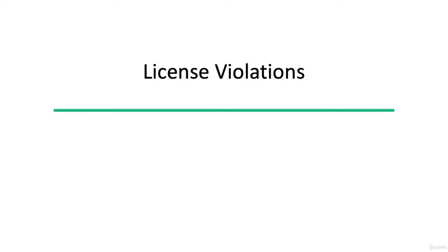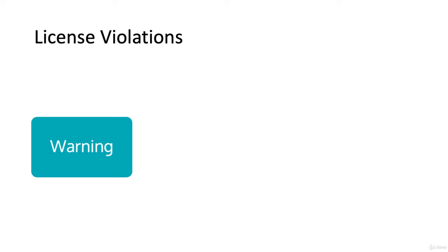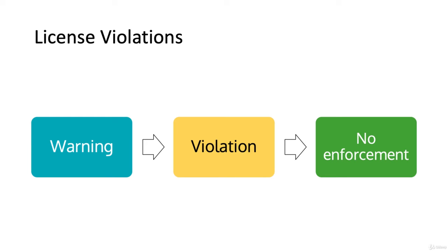License violations. Splunk has an interesting take on license violations. If you exceed your licensed daily volume in any one calendar day, you get a warning. If you get five or more warnings in a rolling 30-day period, you are in violation.